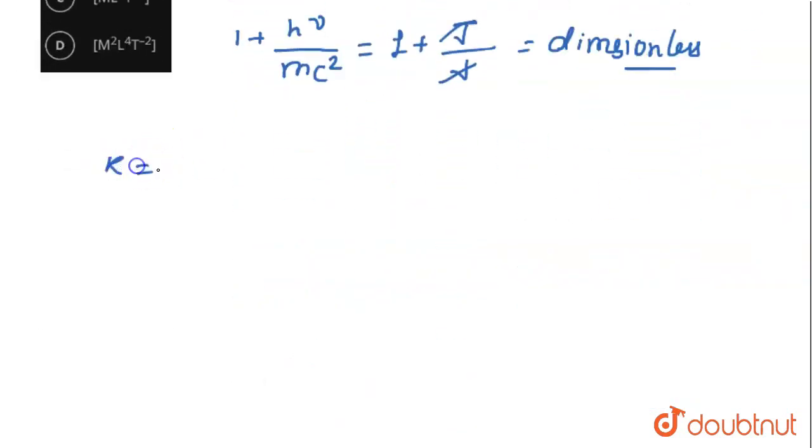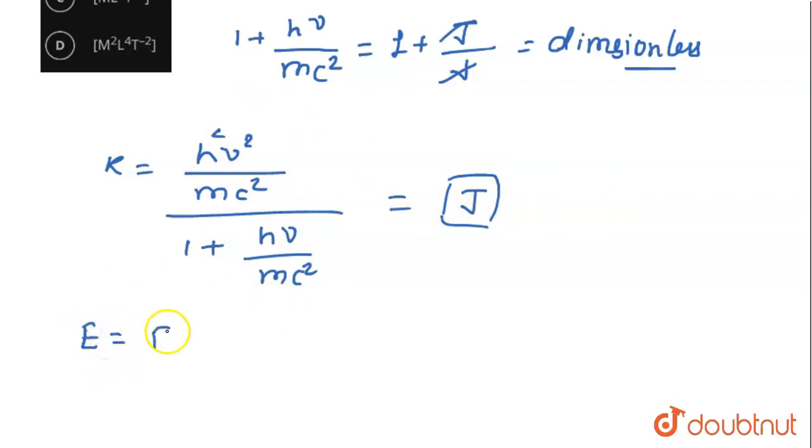Finally, K, which we represent as H nu square divided by mc square divided by 1 plus H nu divided by mc square, has an overall unit of joule. The dimension of energy is force into displacement, which is mass into acceleration into displacement.